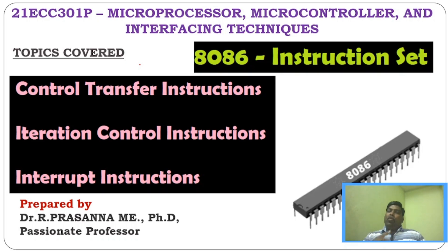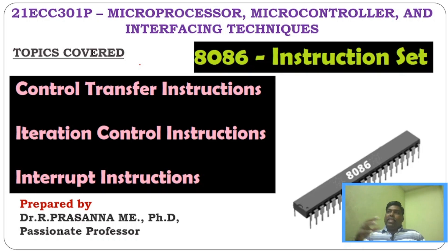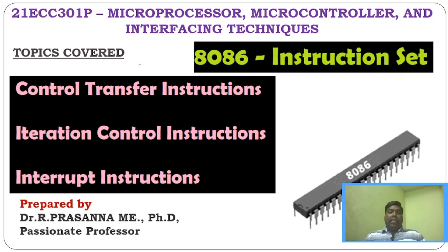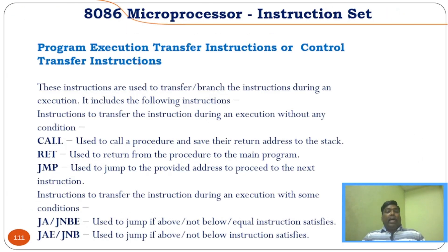Iteration control instruction: until a condition is satisfied, it will keep looping to the same instruction again and again — that is called an iteration control instruction. Interrupt instruction is used to execute interrupt functions. Whenever there is an interrupt, that particular interrupt will be served and once it's done, execution will come back to the main instruction.